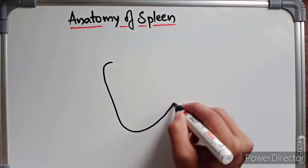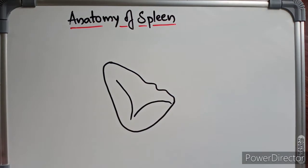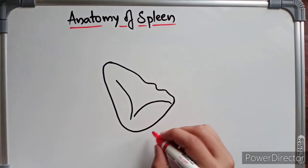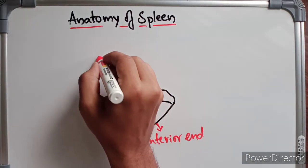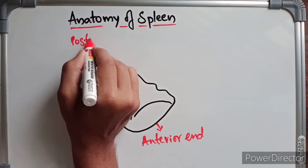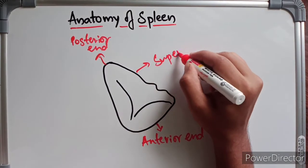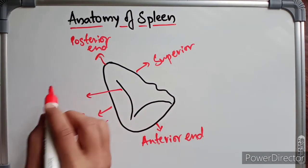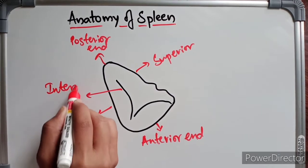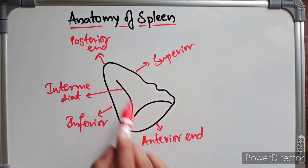Looking at the diagram of the spleen: the anterior end is here, and the posterior end is here. The superior border is at the top, the inferior border at the bottom, and the intermediate border is on the medial side. These are the two ends and three borders of the spleen.